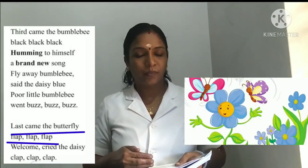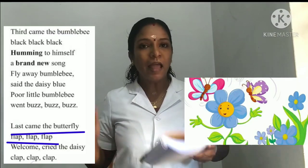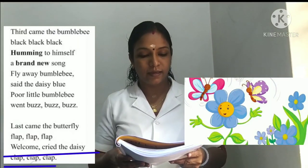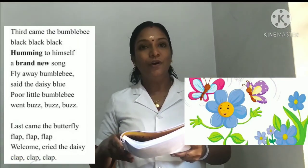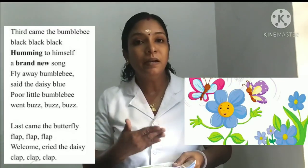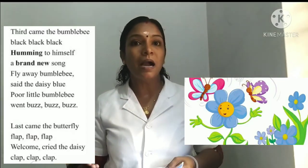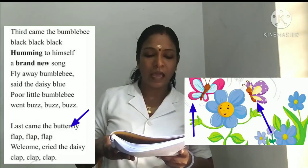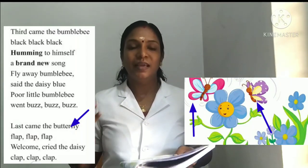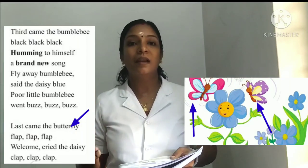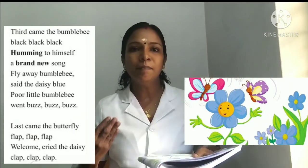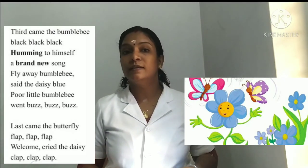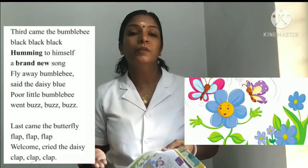At last came the butterfly — flap, flap, flap. Welcome, cried the daisy — clap, clap, clap. So, after the bumblebee, at last came our butterfly. How did it come? With a flap, flap, flap sound. This time the daisy blue was very happy — it cried: welcome, you are welcome butterfly, and it clapped. This time, little blue daisy was very happy to welcome the butterfly.